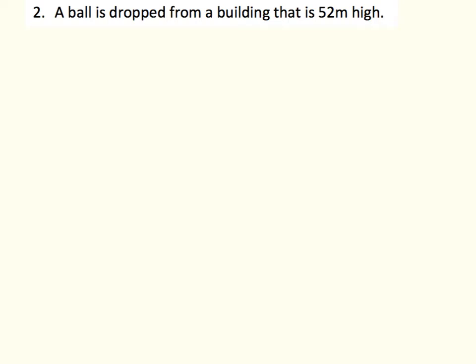In this next problem, a ball is dropped from a building that is 52 meters high. This one gives us less information, but let's see how far we can get. I'll draw the building at 52 meters high. The ball is dropped, so the initial velocity is zero because I didn't throw it — I just dropped it.